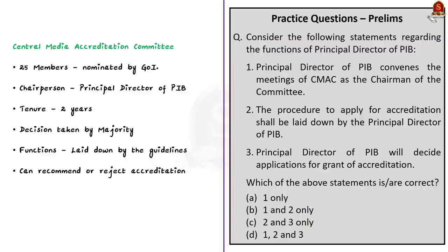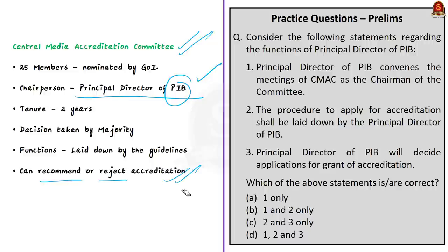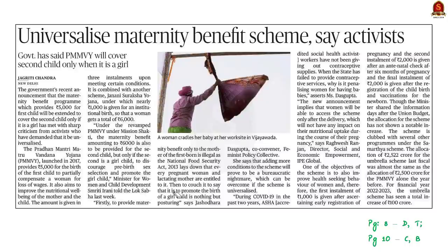The guidelines also establish the Central Media Accreditation Committee, with 25 members nominated by the Government of India. It will be chaired by the Principal Director of PIB — the Press Information Bureau — with a tenure of two years. Decisions are taken on a majority basis. The committee's most important function is to recommend or reject the grant of accreditation.